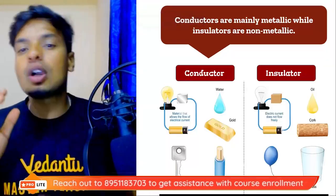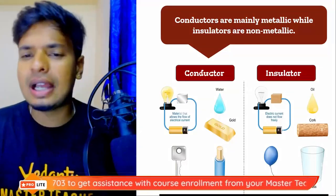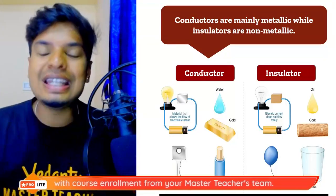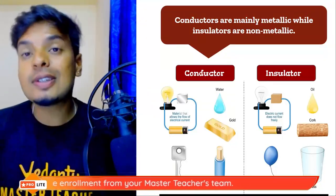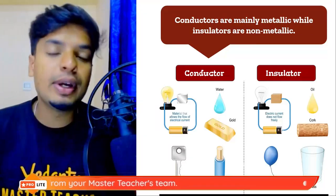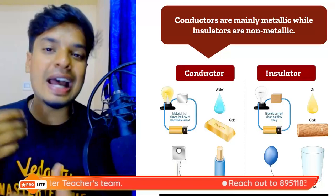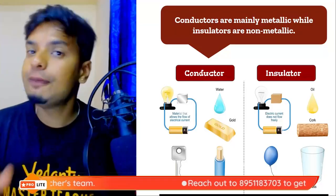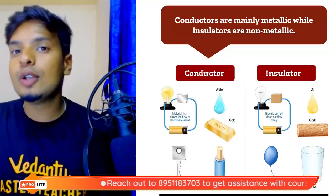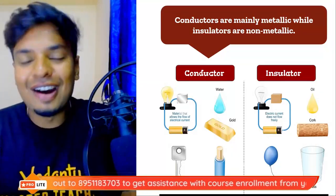Conductors are mainly metallic, while insulators are mainly non-metallic. Examples of conductors include water, gold, copper, and steel. Examples of insulators include oil, wood, glass, and rubber. Both conductors and insulators have their own uses. For example, conductors are used for making wires, while insulators are used for making switch covers, gloves, and many other things.